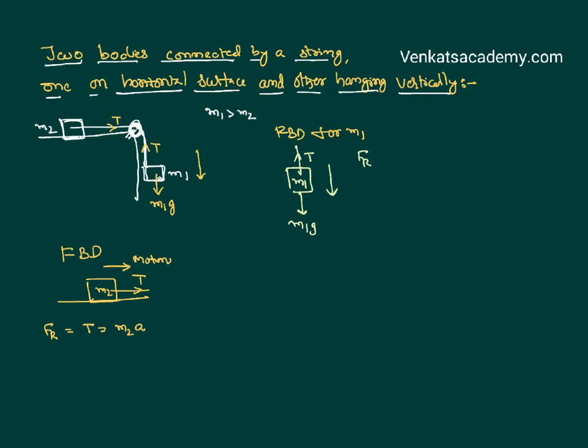I can write F resultant is M1A, equal to force in the direction of motion treated as positive. Force against motion is treated as negative. Substituting the value of tension, M1A will be M1G minus tension, which is M2A.